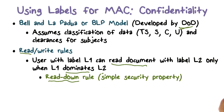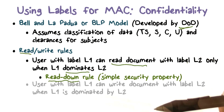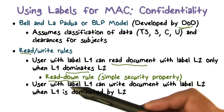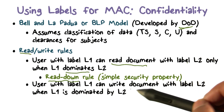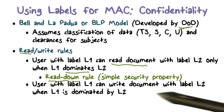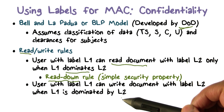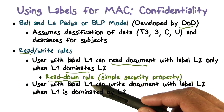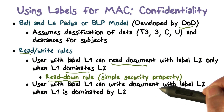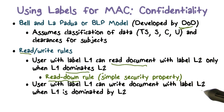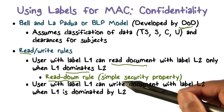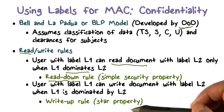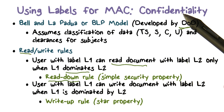Now, how about writes? We need to address both read and write. A user with label L1 can write a document with label L2 when L1 is dominated by L2. This means the user has to be at a level lower than the classification of the document — so if the user is secret, they can write a top secret document but cannot write an unclassified document. This is the write up rule, and it's called the star property.